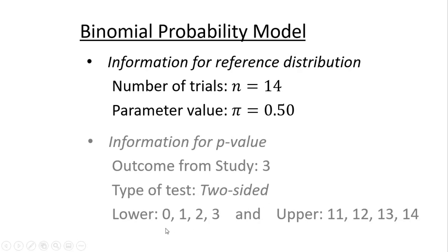In computing the p-value, I'm going to need the probability values from 3, 2, 1, and 0 for the lower side, and then 11, 12, 13, and 14 from the upper side. So let's go ahead, go into Google Sheets, and show you how to get this done.